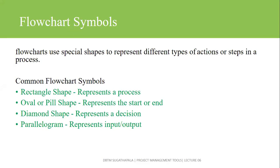The flowcharts use special shapes to represent different types of actions or steps in a process. These are the common flowchart symbols. Rectangle shapes are used to represent a process step. If you have a start or end, this is the oval or pill shape. For decisions — yes or no — we use the diamond shape.